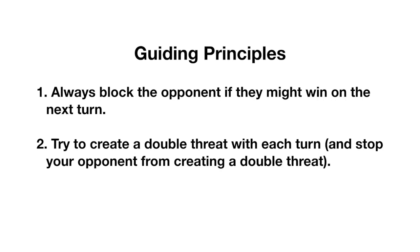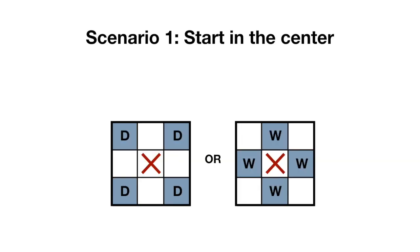Always block the opponent if they might win on the next turn, and try to create a double threat with each turn, or stop your opponent from creating a double threat. We'll focus on the strategy from the perspective of player one who is using x's. We'll first consider the case where x chooses the center square.